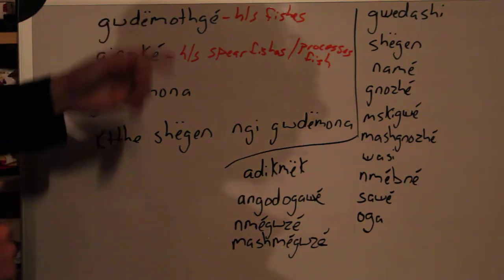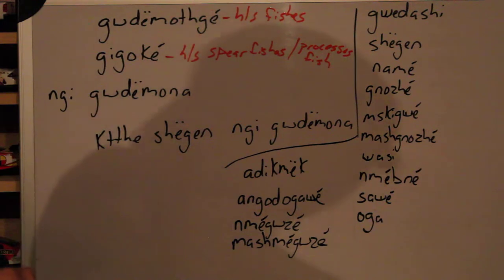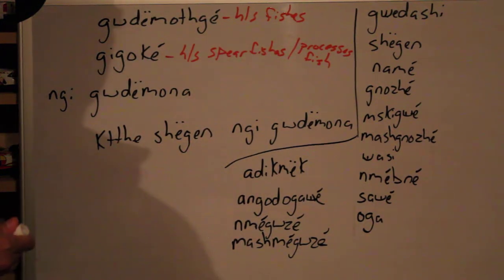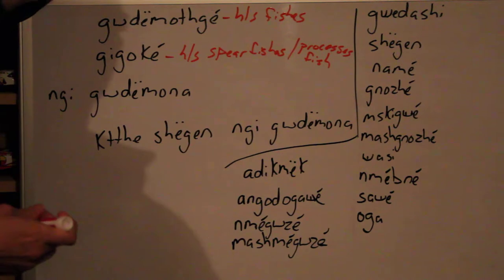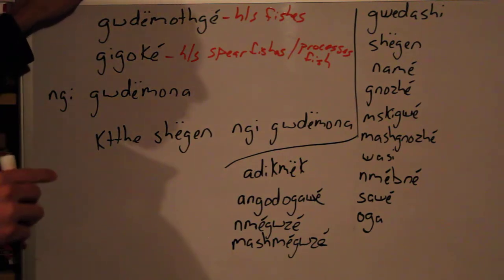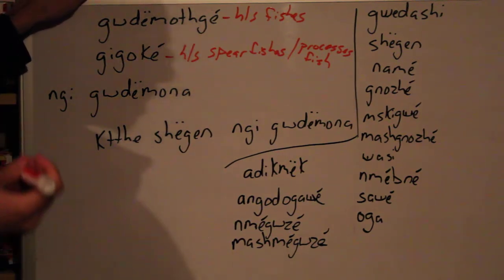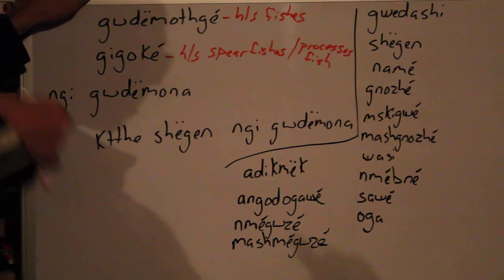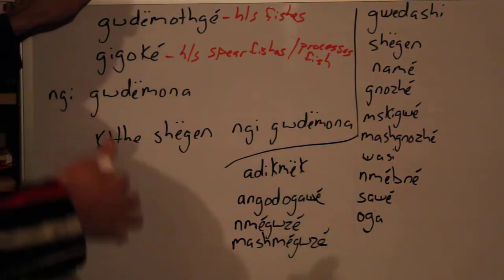But we also have goudemojgé. If I said engi goudemojgé — engi goudemojgé means 'I caught him or her with a hook and line.'